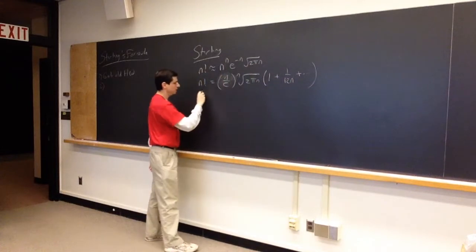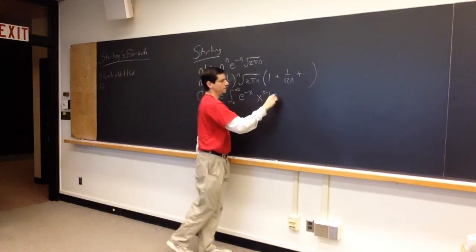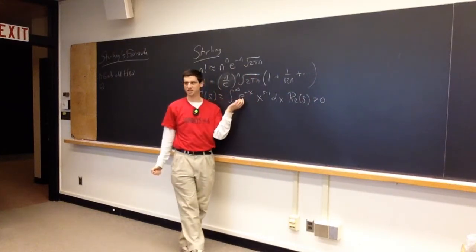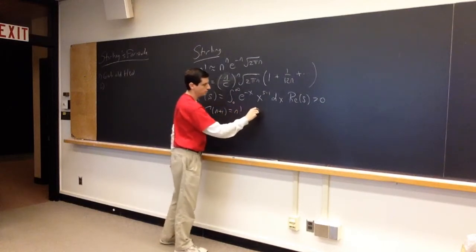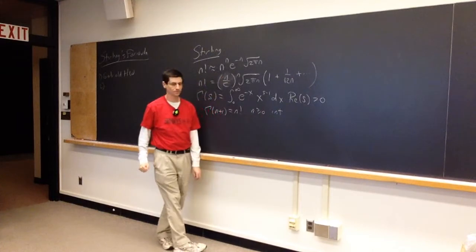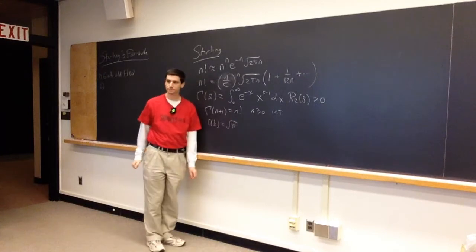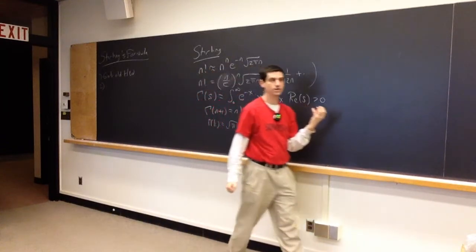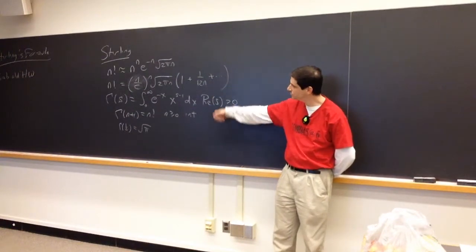If you recall the gamma function: gamma of s equals the integral from 0 to infinity of e to the minus x, x to the s minus 1, dx, for real part of s greater than 0. Gamma of n plus 1 equals n factorial for n a non-negative integer. Gamma of 1/2 was the square root of pi — that was the normalization constant. And we saw by a change of variables that the moments of the standard normal can be interpreted as values of the gamma function. So there are a lot of connections between all these different things.